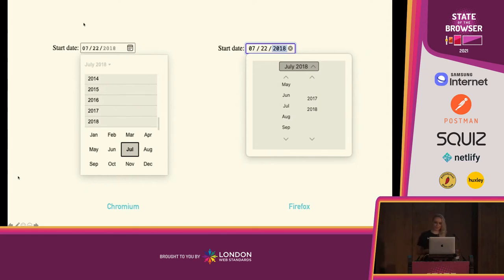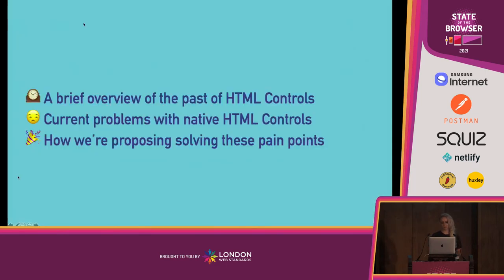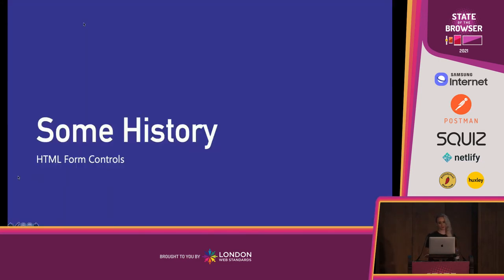The crux of these things is that native controls are neither as customizable nor as extensible as modern developers need them to be, which leads to them recreating their controls from scratch and abandoning native controls despite all of the advantages that the browser engine bakes in for developers. Today I'm going to give a brief overview of the past of HTML controls, talk about the current problems with native controls, and then how we are proposing to solve these pain points in standards groups and eventually in browsers.